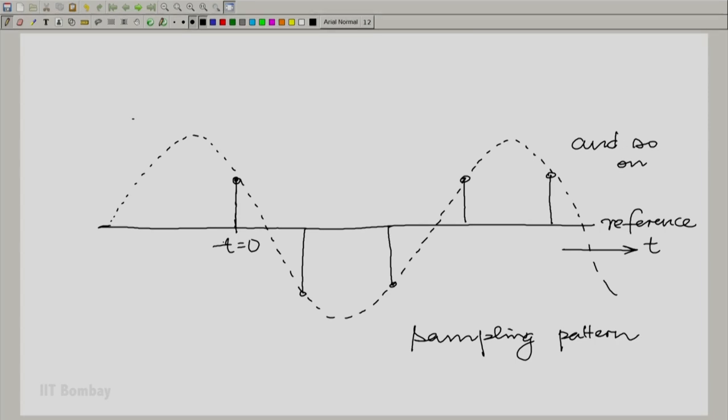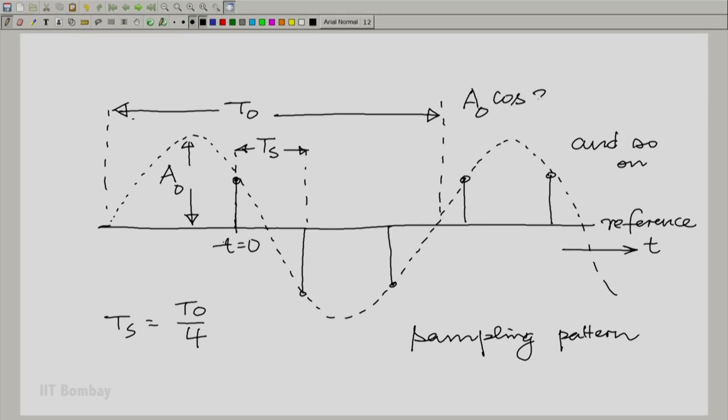Now, let us write an expression for this sinusoid. So, let us assume the amplitude is a naught and of course, this interval, the period of the original sinusoid is taken to be t naught, the sampling interval is taken to be t s. So, clearly, t s is equal to t naught by 4 and the expression for the sinusoid is clearly a naught cos 2 pi by t naught times t plus pi by 4. This is the frequency here, the angular frequency and this is what is called the starting phase. This is the amplitude.